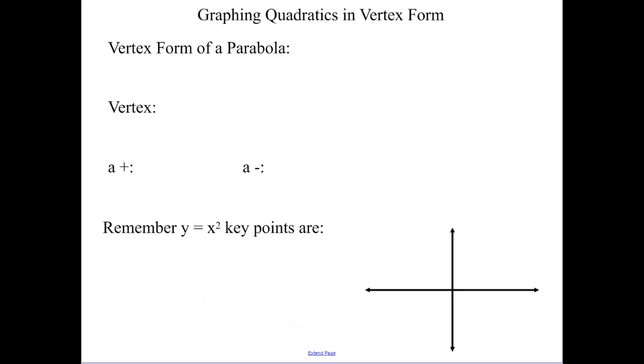Today we're going to be talking about graphing quadratics in vertex form. Our vertex form of a parabola is y equals a times x minus h squared plus k. Now that should look familiar from our standard form of an absolute value function. The only difference is now we're going to look like a parabola. Instead of an absolute value being a v, a parabola has a u shape to it.